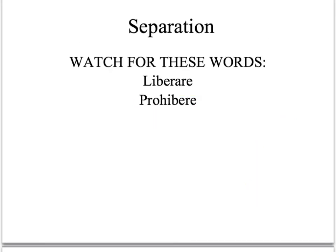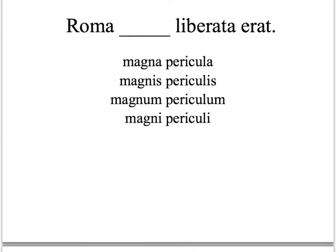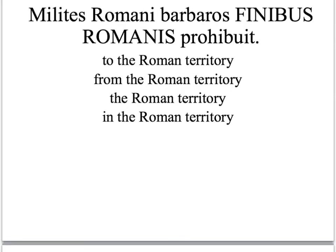Another commonly forgotten use of the ablative is the ablative of separation. Two of the most common verbs that use the ablative of separation are liberare and prohibere — you are freed from an ablative, or you are prohibited from an ablative. For example: 'Roma blank liberata erat' — we have a form of liberare, so it is free from great danger in the ablative case. And: 'Milites Romani barbaros finibus Romanis prohibuerunt' — the Roman soldiers kept the barbarians from the Roman borders. That is an ablative of separation.